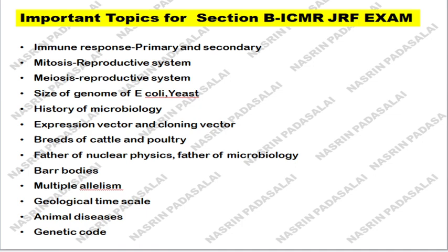Next, know about the immune response — primary immune response and secondary immune response. Study mitosis and meiosis, including when crossing over occurs. With respect to the reproductive system, study mitosis and meiosis with special focus on the reproductive system. In the female reproductive system, know that cells in the ovaries are stopped at the prophase I stage, and after a girl attains puberty the stage resumes. Know about the genome size of E. coli, yeast, and the human genome project.